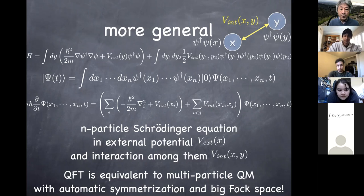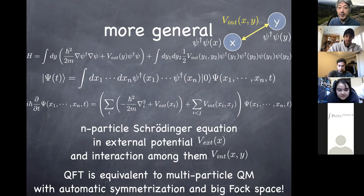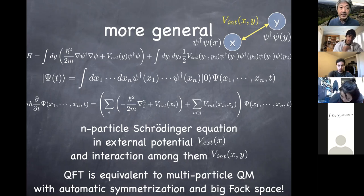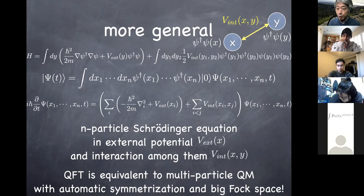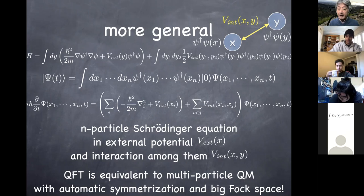What involves lengthy algebra is acting this Hamiltonian on the state and commuting all the annihilation and creation operators with each of the N creation operators in the state. It's straightforward — no ambiguity — and at the end of the day you get the right-hand side of the equation. This Hamiltonian from field theory ends up giving exactly the same right-hand side as the Hamiltonian in quantum mechanics acting on the wave function. That's what I mean when I say you can derive quantum mechanics from quantum field theory.